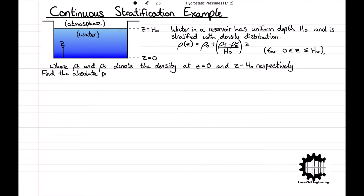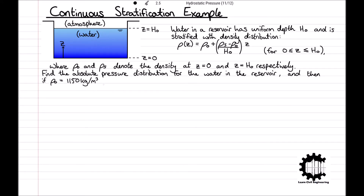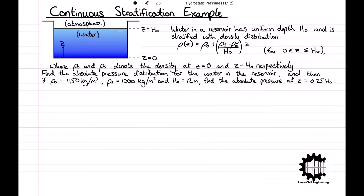Rho 0 and rho S denote the density at Z equals zero and Z equals H0 respectively. Find the absolute pressure distribution for the water in the reservoir, and then if rho 0 equals 1150 kilograms per meter cubed, rho S equals 1000 kilograms per meter cubed, and H0 equals 12 meters, find the absolute pressure at the point Z equals 0.25 H0. Pause the video here if you would like to attempt this question yourself.